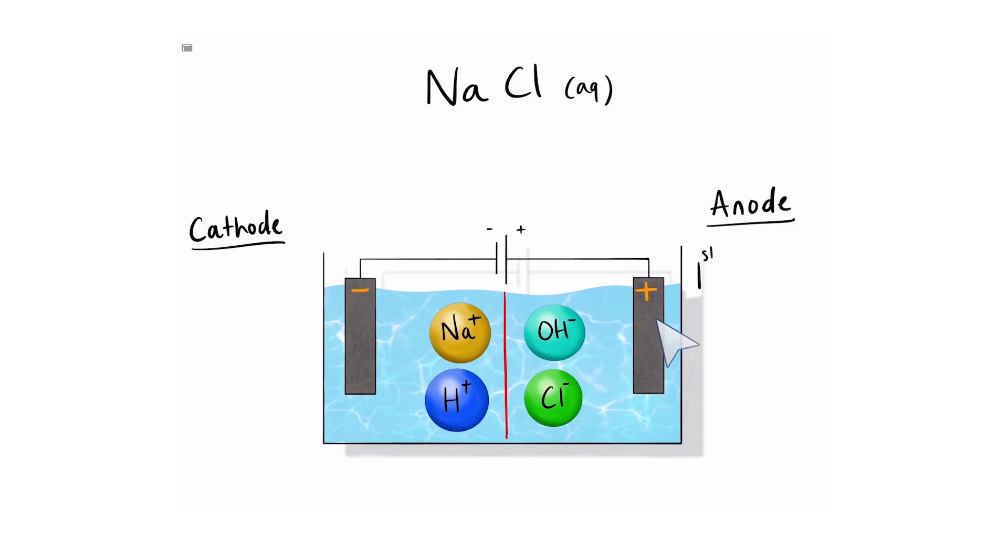As for the anode, the first priority is for anything that's in group 7, such as bromine, chlorine, iodine, astatine, etc. The first priority is for any halogen. If there are no halogens in the solution, then hydroxide gets to go.